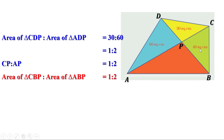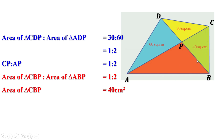We know the area of triangle CBP is 40 cm². The ratio between the areas of these two triangles is 1 to 2, meaning the area of triangle ABP is 2 times the area of triangle CBP. Since the area of triangle CBP is 40 cm², the area of triangle ABP is 80 cm².